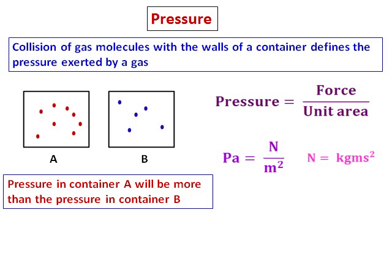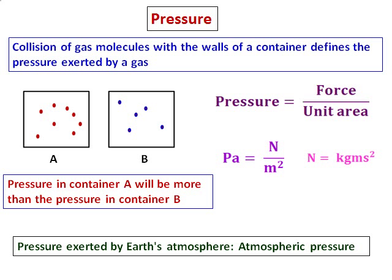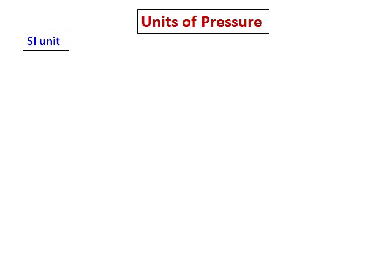The unit of pressure is Pascal. The unit of force is Newton and the unit of area is meter squared, so the SI unit of pressure is Pascal. The pressure exerted by the Earth's atmosphere is called atmospheric pressure.